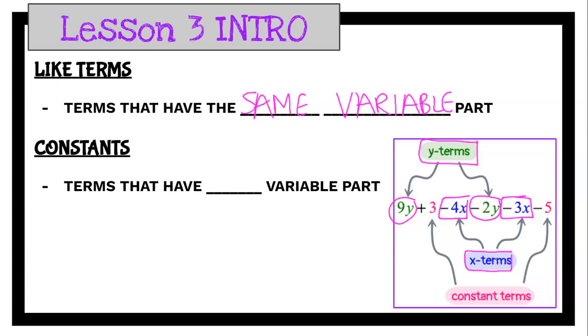And then we have constant terms. So constants are also like terms, and they are terms that have no variable part. So they still have the same variable part, they just don't have a variable, so it makes them the same with no variable.